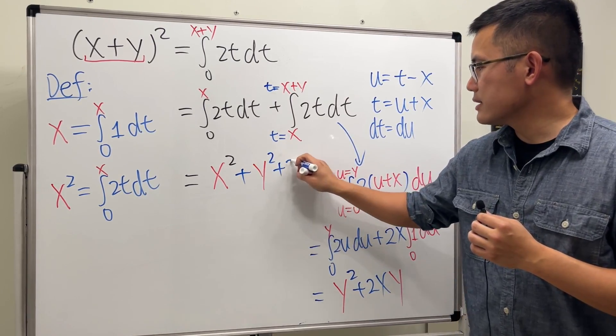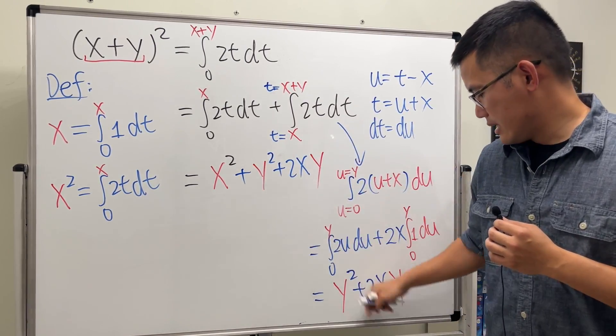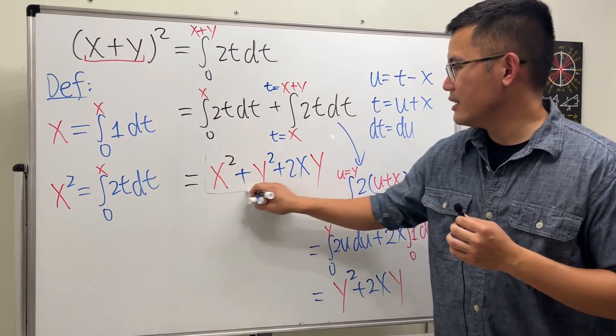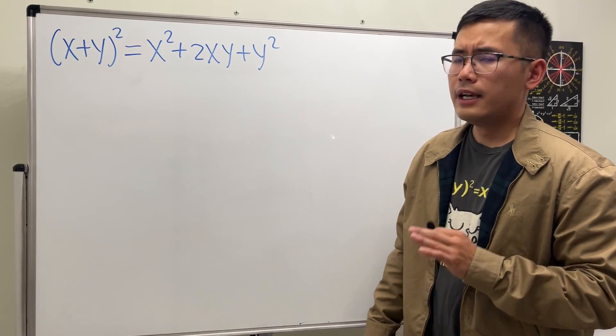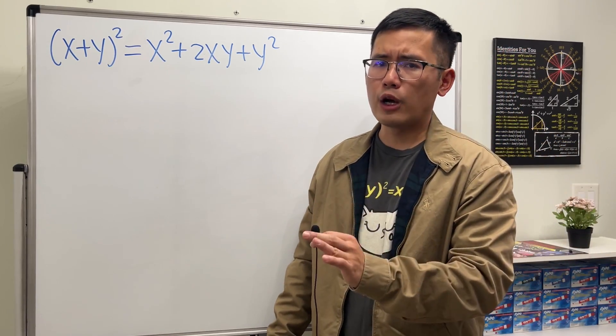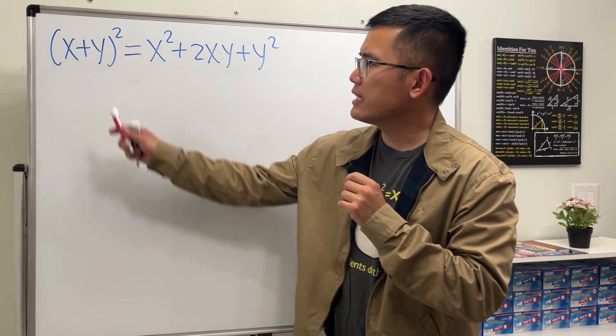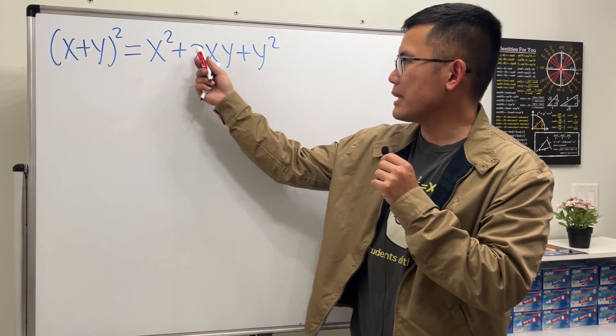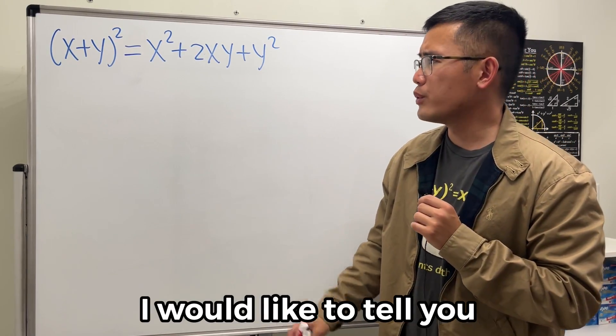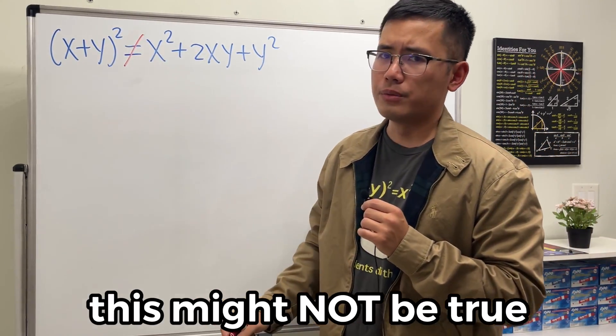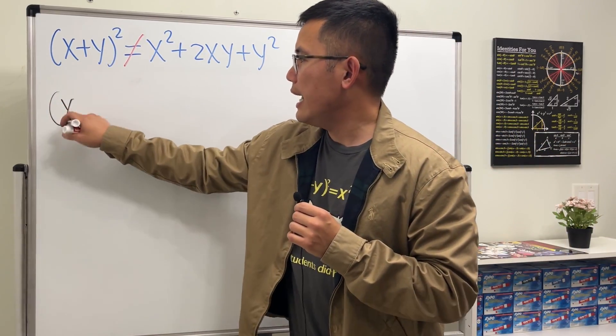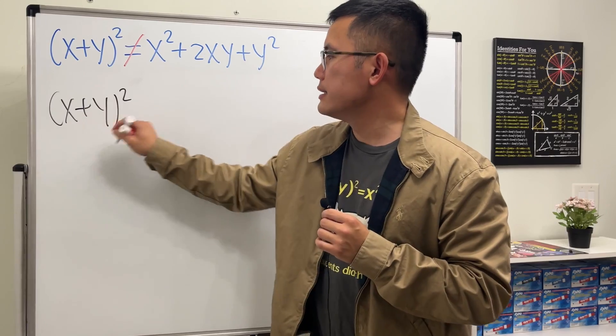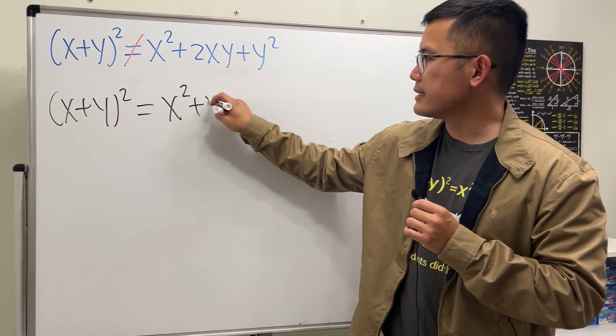So I'm pretty sure all of your teachers, from pre-algebra to calculus, have told you that x plus y square is equal to x square plus 2xy plus y square. But now I wanted to tell you this right here might not be true, because x and y might not commute. So the best answer is x plus y square is equal to x square plus xy plus yx plus y square. Welcome to abstract algebra.